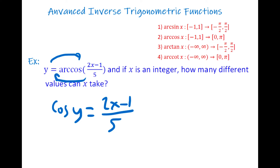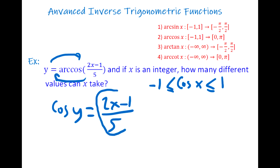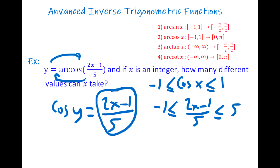Whatever y is, the output of cosine is always between -1 and +1. So (2x−1)/5 must be between -1 and +1: −1 ≤ (2x−1)/5 ≤ 1.